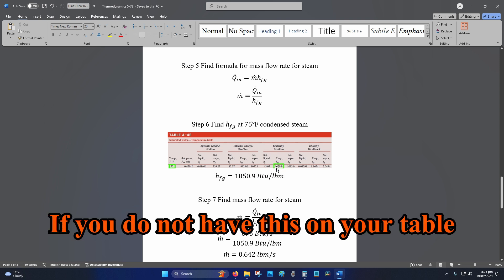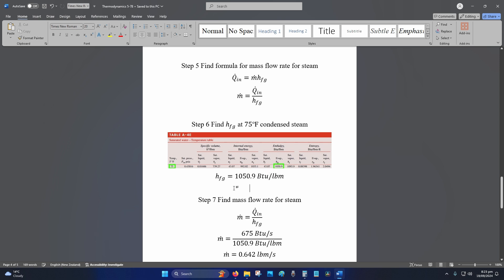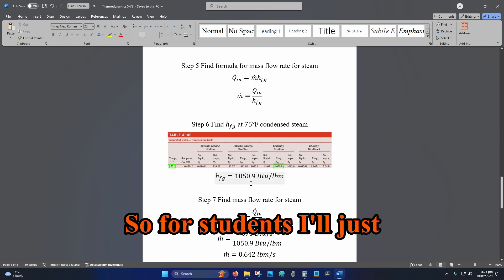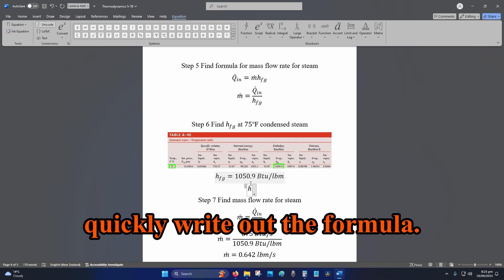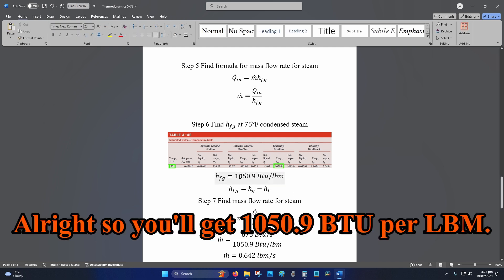If you do not have this on your table, what you do, it is HG minus HF. So for students, I'll just quickly write out the formula. So HG minus HF. All right, so you'll get 1050.9 BTU per LBM.